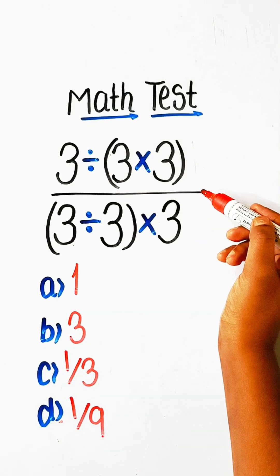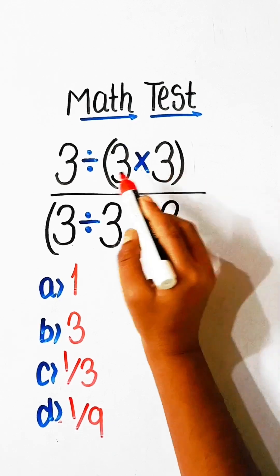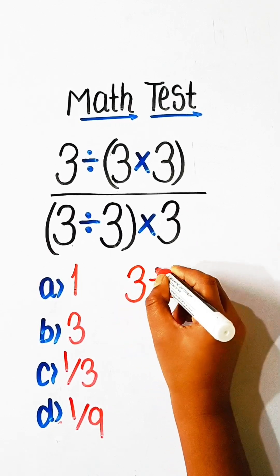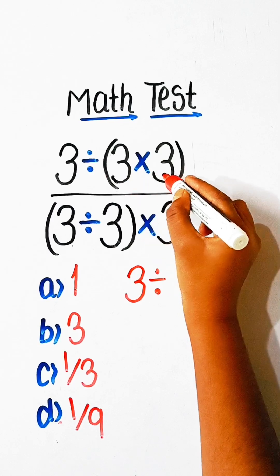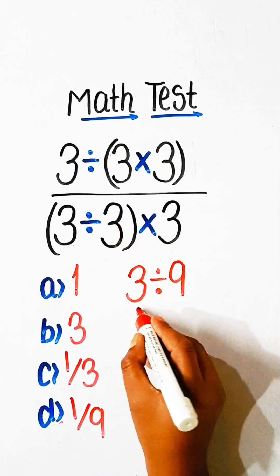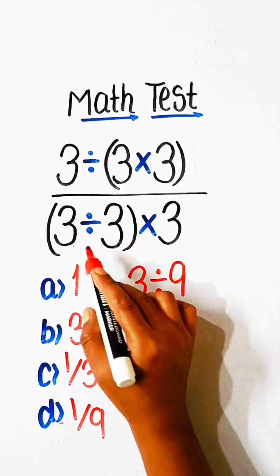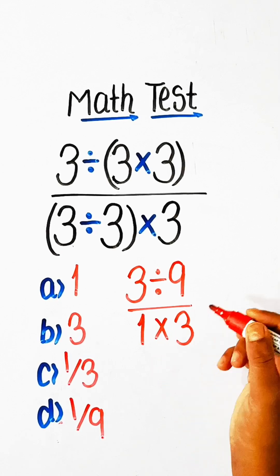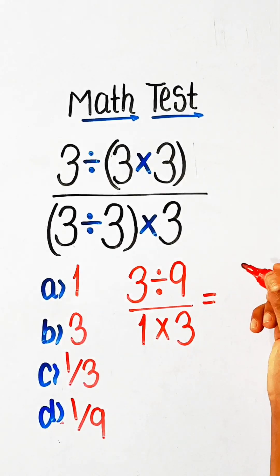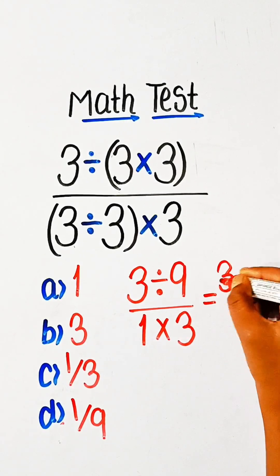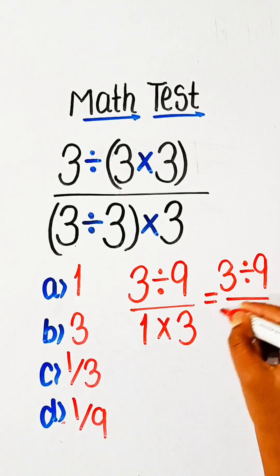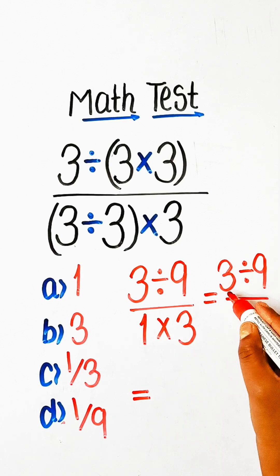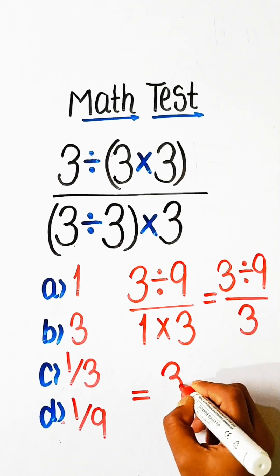We will try to solve this expression. We will solve the upper part of this expression. So we can write here 3 divided by 3, 3 is 9 upon 3 divided by 3 is 1 multiplied by 3. So we can write 3 divided by 9 upon 3 and we can write this 3 upon 9 like this.